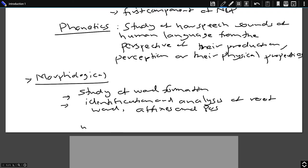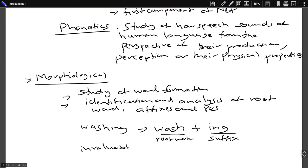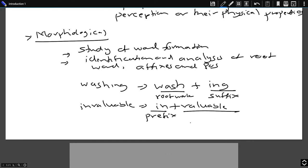Let's take an example. Suppose we see the word 'washing.' This word is a combination of two tokens: 'wash' and 'ing.' 'Wash' is our root word or root token, and 'ing' is our suffix. If we see another word, 'invaluable,' this is a combination of 'in' plus 'valuable.' Here 'in' is our prefix while 'valuable' is our root token. In morphological analysis, we study how such words are formed and try to extract the root token to understand what additional components are added to it.